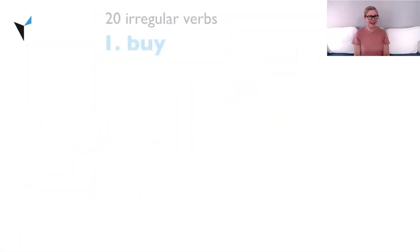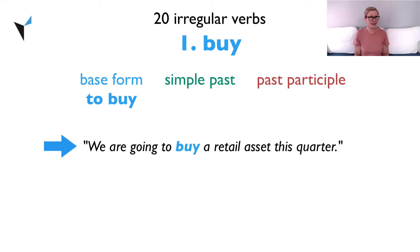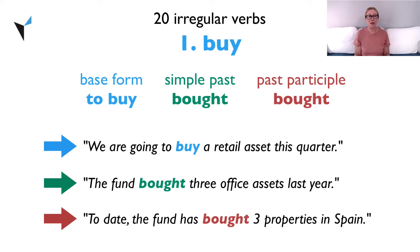Ready? Let's go! First up is verb one, buy. The base form is to buy. We are going to buy a retail asset this quarter. The simple past is bought. The fund bought three office assets last year. The past participle is also bought. To date, the fund has bought three properties in Spain.